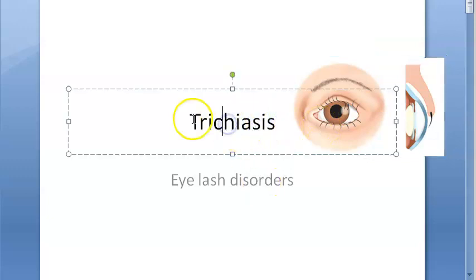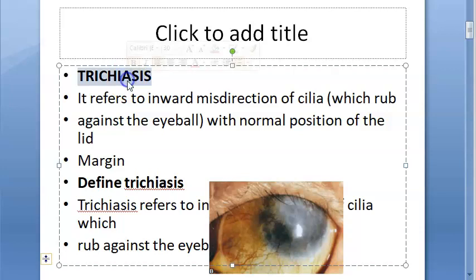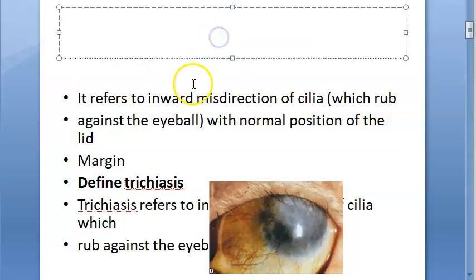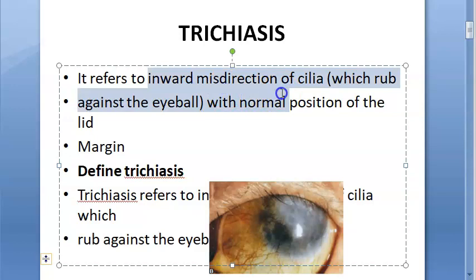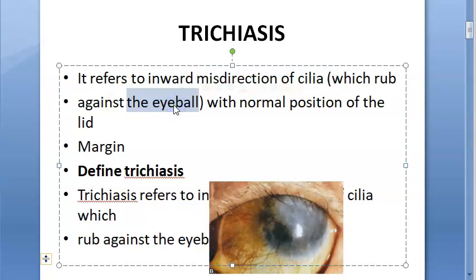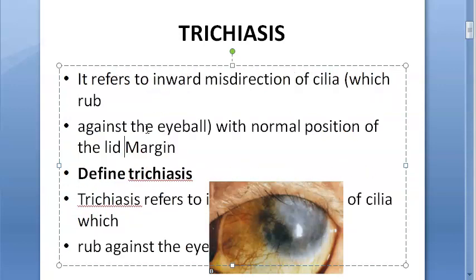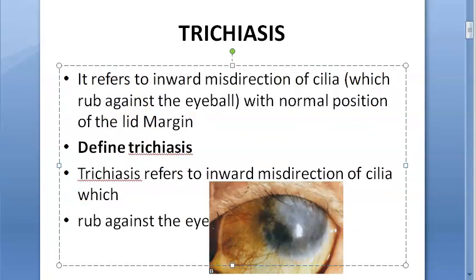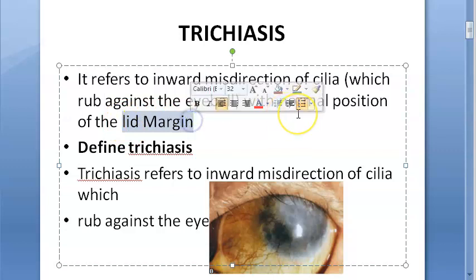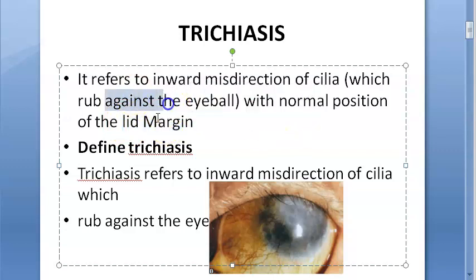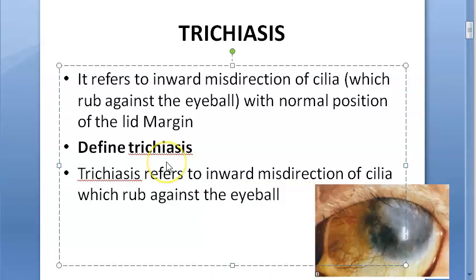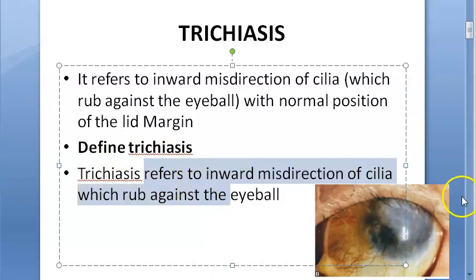Trichiasis can cause corneal ulcers and a lot of problems, including non-healing corneal ulcers. Trichiasis refers to the inward misdirection of the cilia. If it's outward there's no problem, but inward is the issue. Normally, lashes sit at the lid margin, but in trichiasis they turn inward and rub against the eyeball.